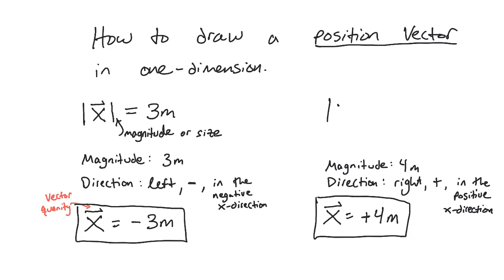Likewise, over here, the magnitude of this position vector is four meters. So you can see a notational difference in how we write the full quantity, like the vector, the position vector, we have to have a direction, here's that minus sign, and then the magnitude here.